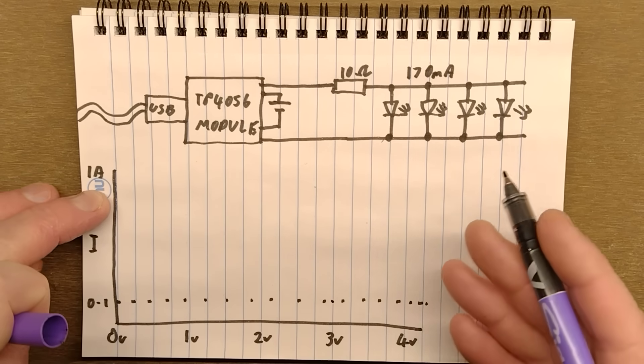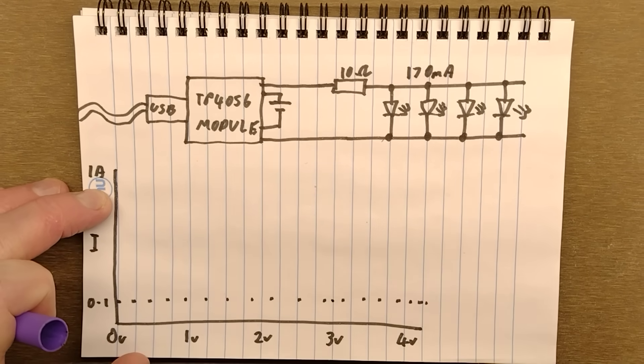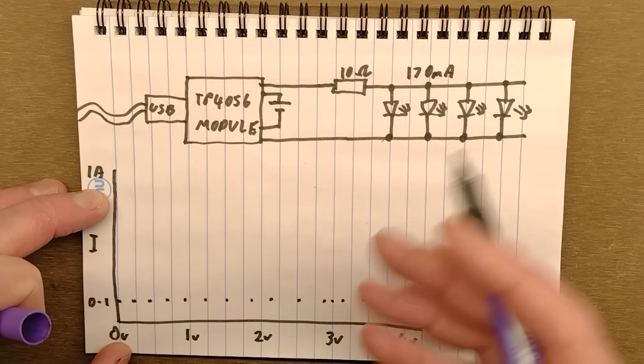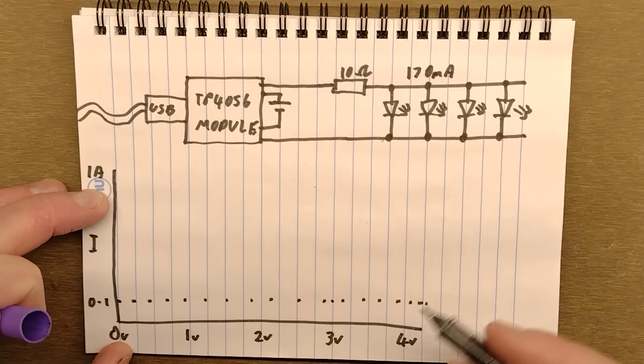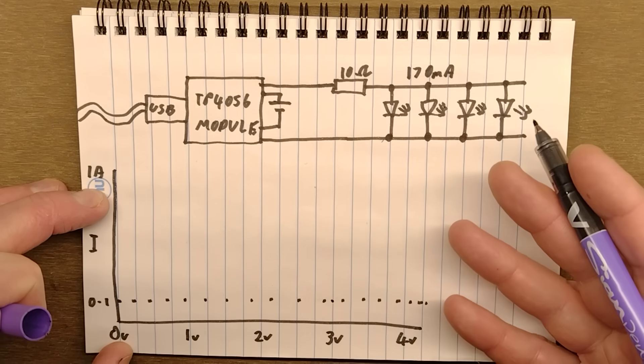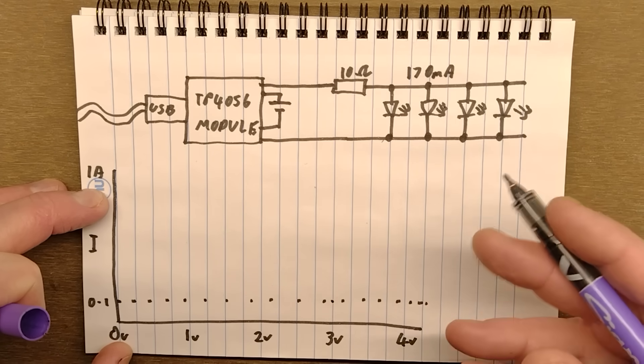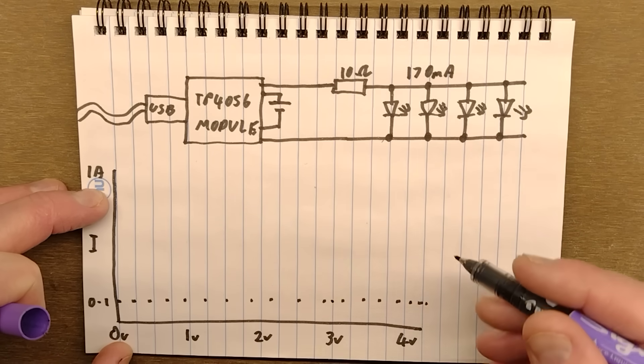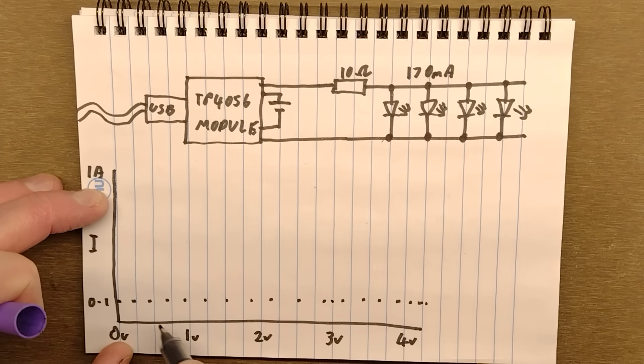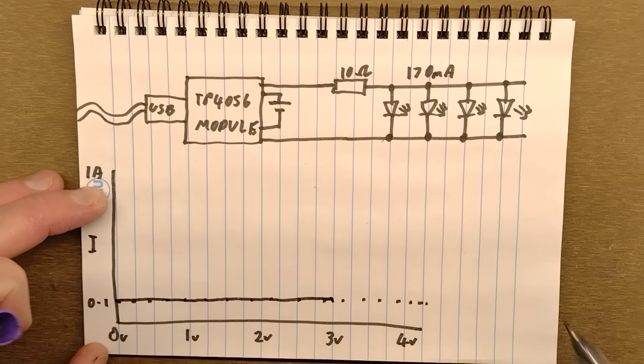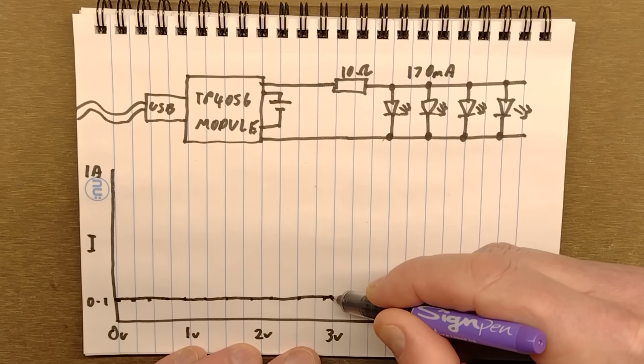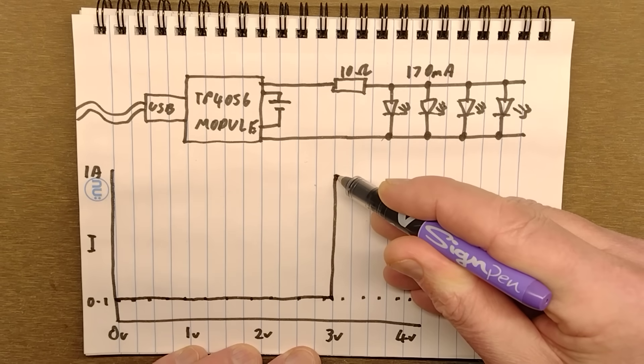the TP4056 will initially start trickle charging the cell at 100 milliamps. So even if the cell had been completely discharged to zero, which is not usually recommended, but does happen and doesn't instantly mean the cell is destroyed. It's not great for it, but it's not going to be the end of the world. Not recommended for high current applications though, like tool batteries. You don't really want to use a battery at super high current if it's been down to zero volts.